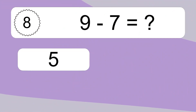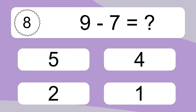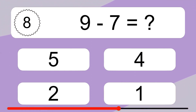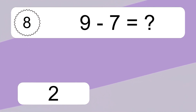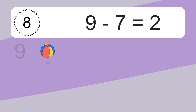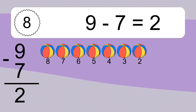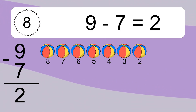9 minus 7 equals what? 9 minus 7 equals 2. Let's count it: 8, 7, 6, 5, 4, 3, 2.